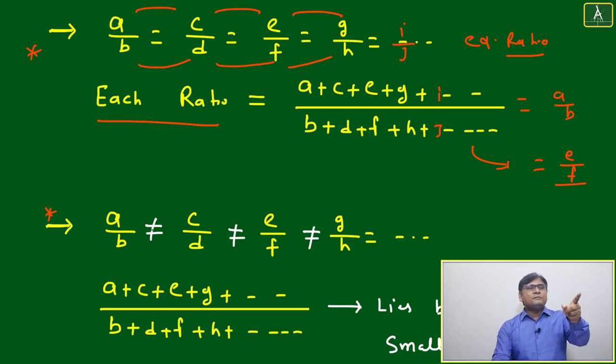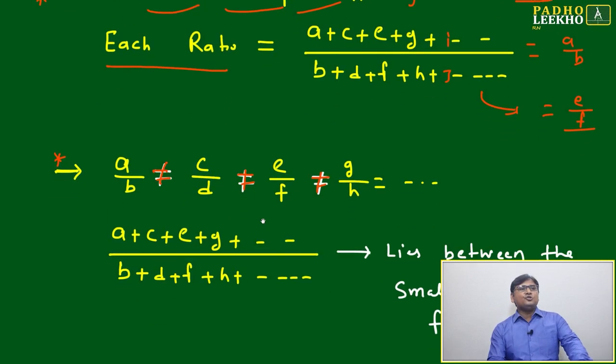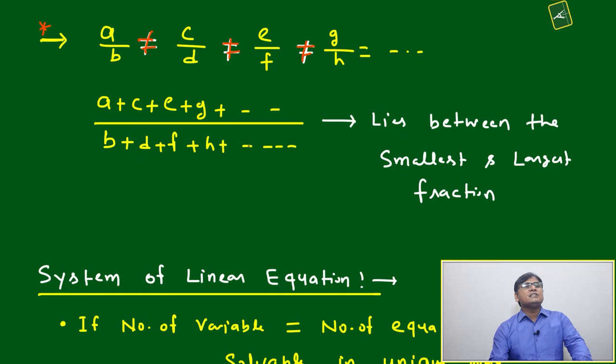Now think a little bit more. Suppose if a by b is not equal to c by d, whereas here they were equal, then what will happen? This ratio can be defined, but it will be equal to which ratio? a by b is not equal to c by d, c by d is not equal to e by f, and e by f is not equal to g by h.